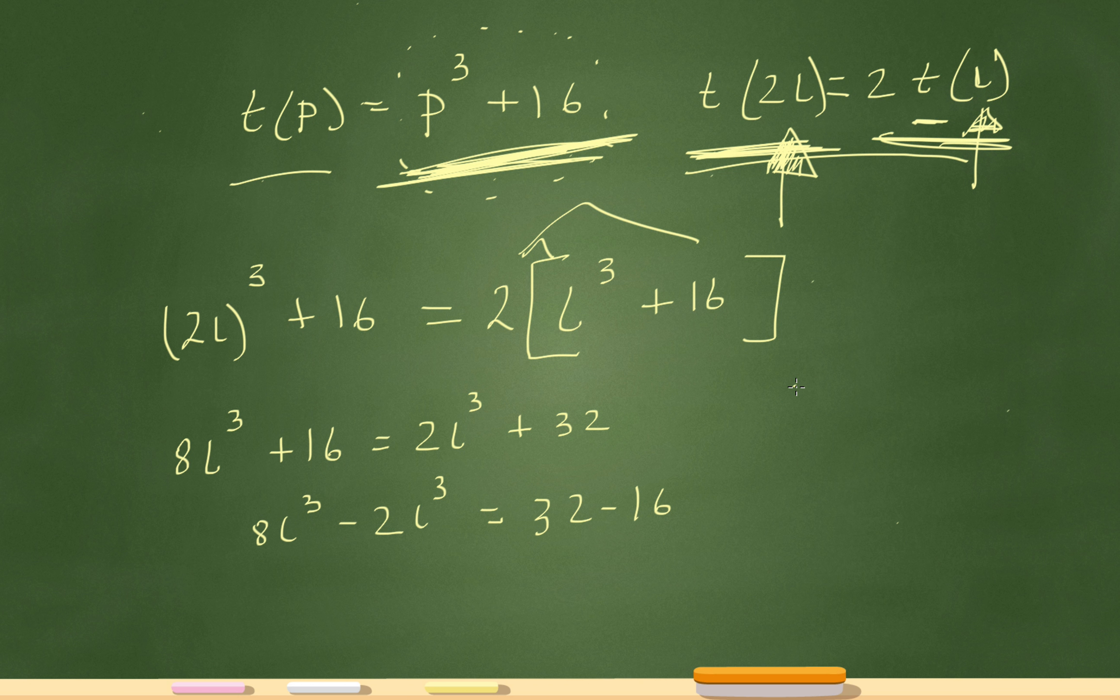8l cubed minus 2l cubed is 6l cubed. And 6l cubed will equal 16. Now divide both sides by 6 and I'll have l cubed equals 16 over 6. And 16 over 6 is the same thing as 8 over 3.